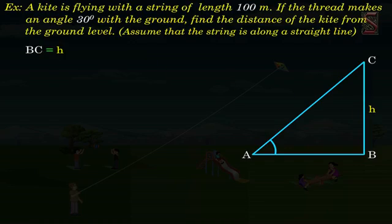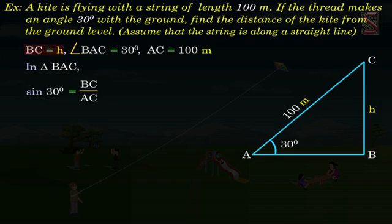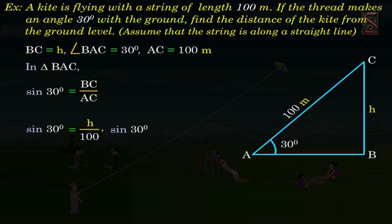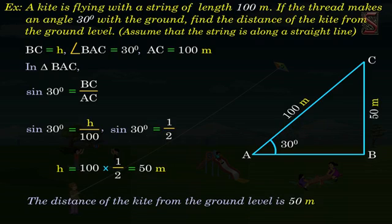Solution. Let h be the distance of the kite from the ground level. Given angle BAC is 30 degrees and the length of the string AC is equal to 100 meters. In triangle BAC, we have sin 30 degrees is equal to BC by AC. Here BC is equal to h. So, sin 30 degrees is equal to h by 100. But sin 30 is 1 by 2. So, h is equal to 100 into 1 by 2, which is equal to 50 meters. Hence, the distance of the kite from the ground level is 50 meters.